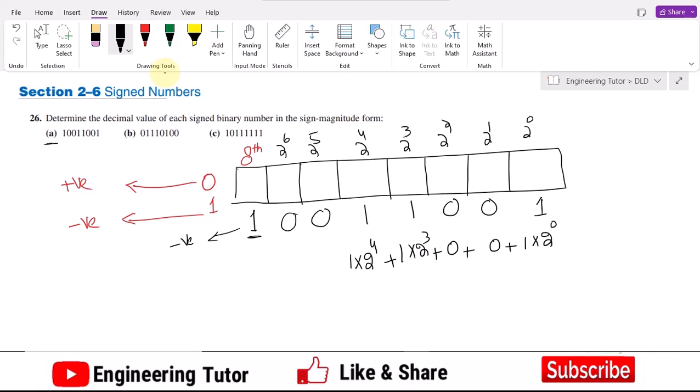while this one will be multiplied with 2 raise power 3, this one will be multiplied with 2 raise power 4. Now these zeros are also multiplied with these terms but the resultant of this multiplication will be 0, that is why I have written them here like this.